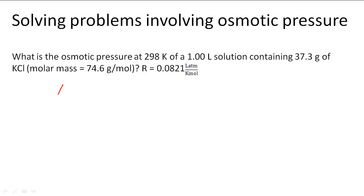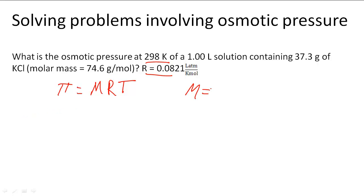We know that osmotic pressure is calculated by multiplying molarity times the gas constant times the temperature. We know the gas constant and we also have the temperature, so we have to calculate molarity. We need the moles of the solute over the liters of the solution.